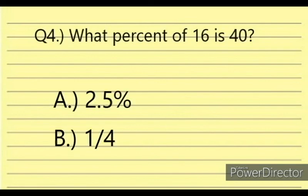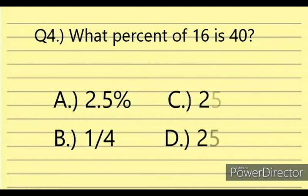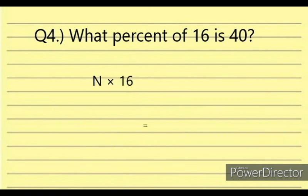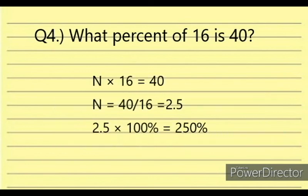Answer choices: A. 2.5%, B. 1 over 4, C. 2,500%, D. 250%. Set up: N times 16 equals 40. N equals 40 divided by 16 equals 2.5. Then 2.5 times 100% equals 250%. The answer is letter D.